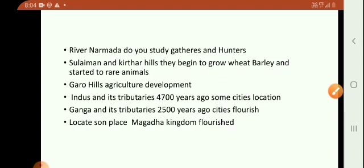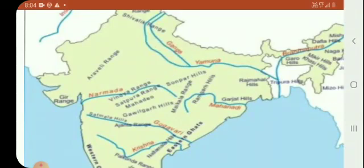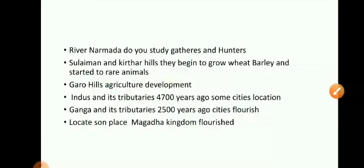Around 4700 years ago, in this particular Indus region, there were some cities. You will find very, very interesting things about these cities. These cities were very wonderful, and you will read about this in further classes. And near Ganga and its tributaries, around 2500 years ago, the cities flourished. You can see Ganga here — around 2500 years ago, the city started to flourish.